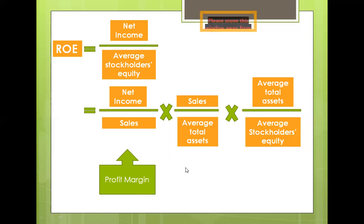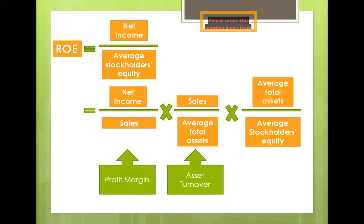The second component is the asset turnover. Asset turnover is a productivity measure that reflects the volume of sales that a company generates from each peso invested in assets. A company can increase its asset turnover by increasing sales volume with no increase in assets and or by reducing asset investment without reducing sales.